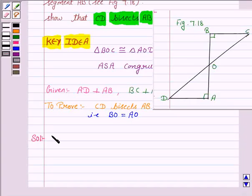Now our aim is to prove that triangle BOC is congruent to triangle AOD. So in triangle BOC and AOD, we are given that BC is equal to AD.